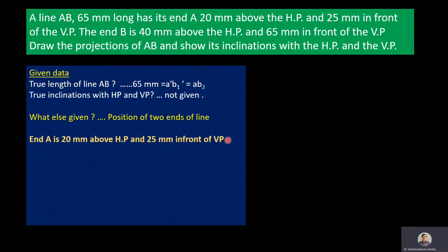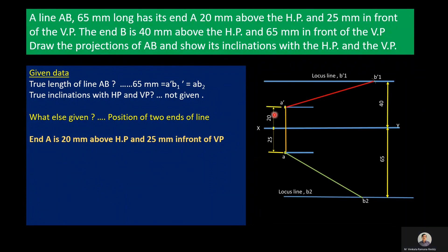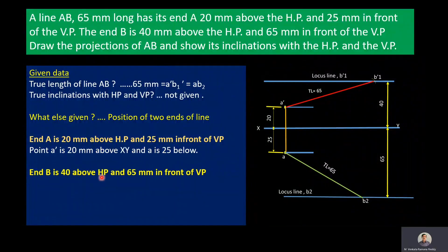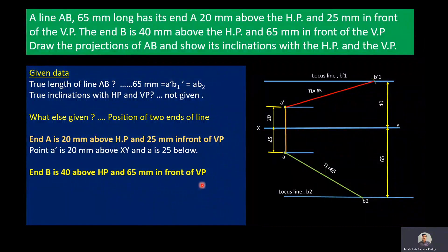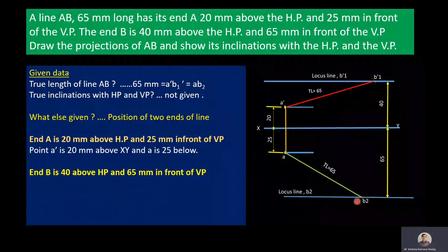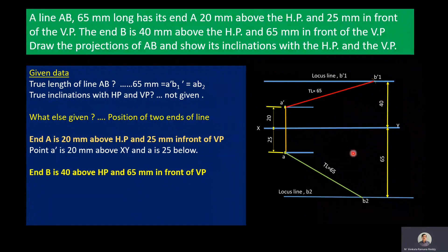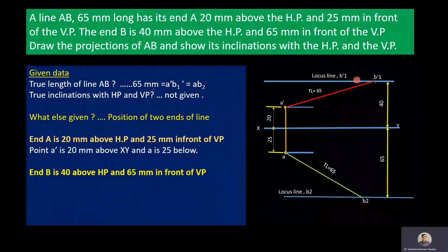End A is 20 mm above HP and 25 mm in front of VP, so A' is 20 mm above XY and A is 25 mm below XY line. End B is 40 mm above HP and 65 mm in front of VP. Therefore B1' is 40 mm above XY line and B2 is 65 mm below XY line. The suffix 1 is used for the first true length and suffix 2 for the second true length.